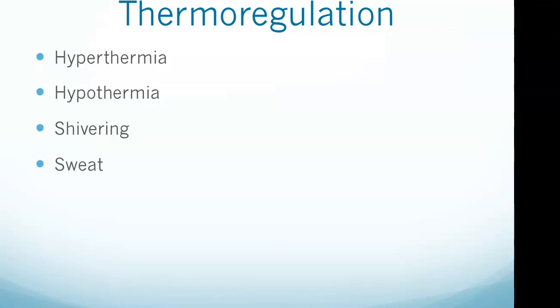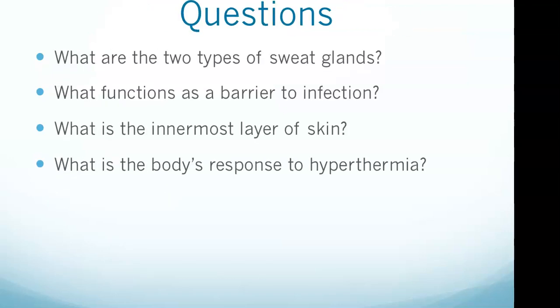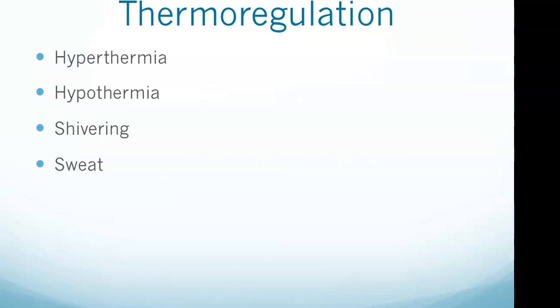The body also increases excretion of sudoriferous glands to cool the body through the endothermic evaporation of water. On the other hand, constriction of blood vessels, shivering, and contraction of hair follicle muscles occur during hypothermia to decrease heat loss. The fourth question: what is the body's response to hyperthermia? The body dilates blood vessels in the dermis to increase heat loss at the skin.